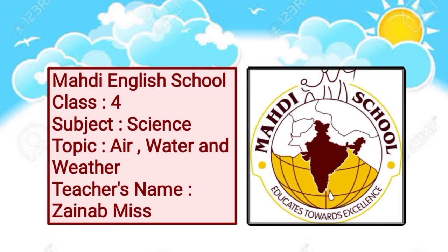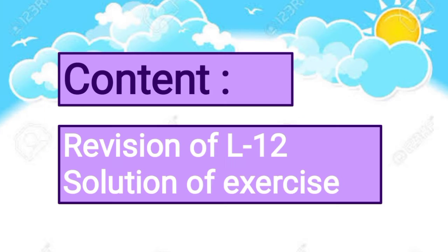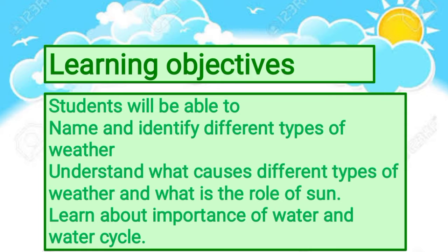Hello children, welcome to another session of science class 4. Today we will understand lesson 12: air, water and weather, and will solve the exercise of lesson 12. This lesson will help you to name and identify different types of weather, understand what causes different types of weather, the role of the sun, and learn about the importance of water and the water cycle.